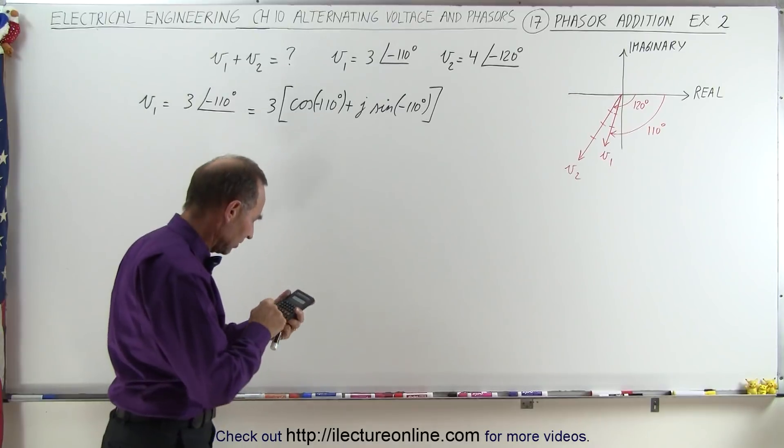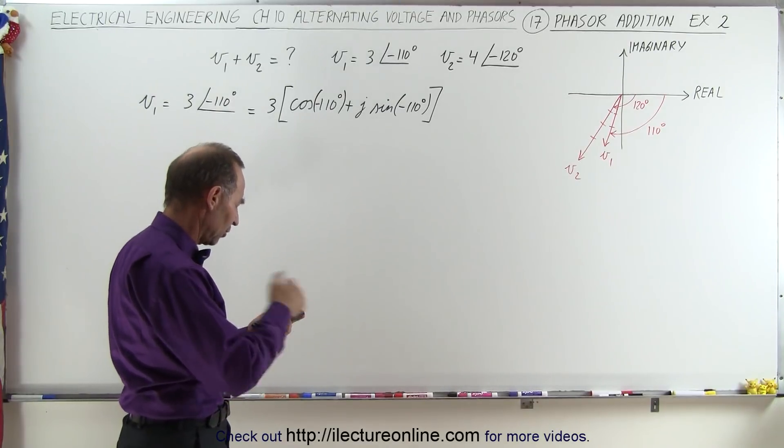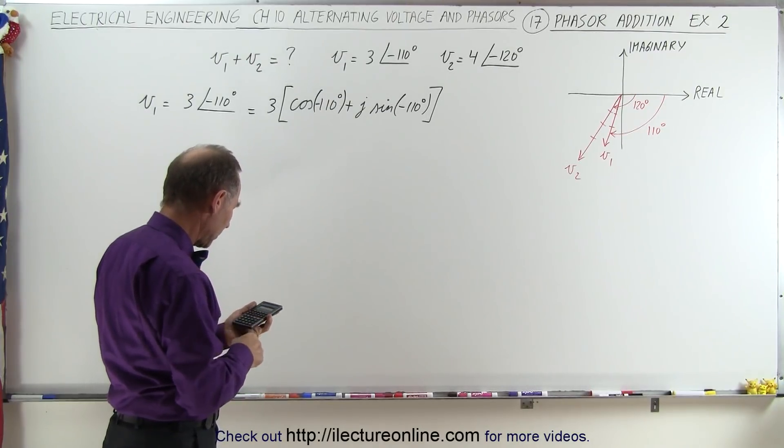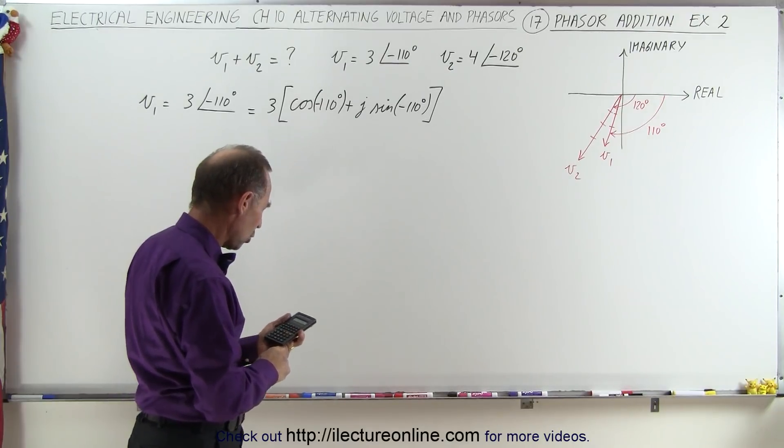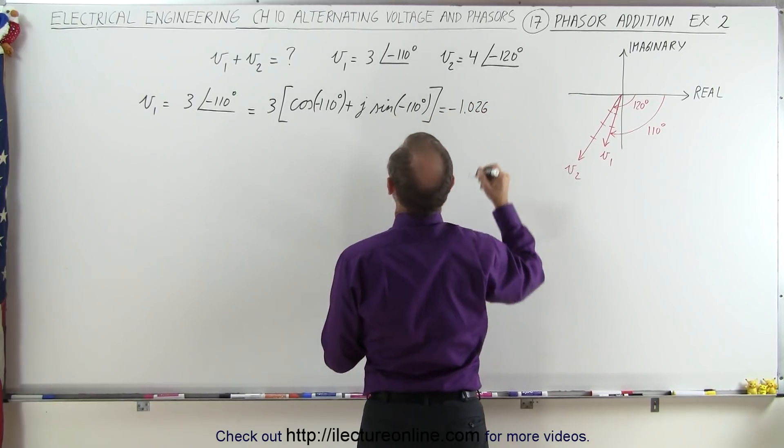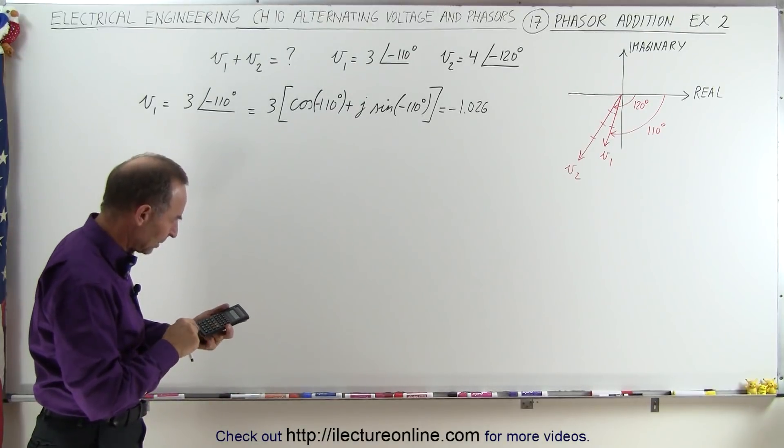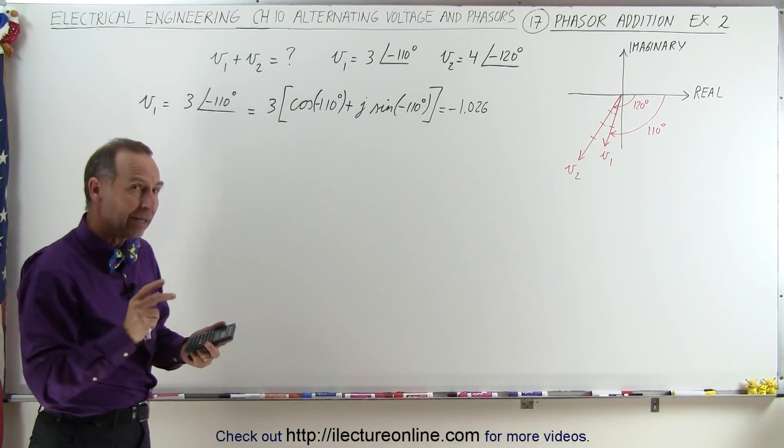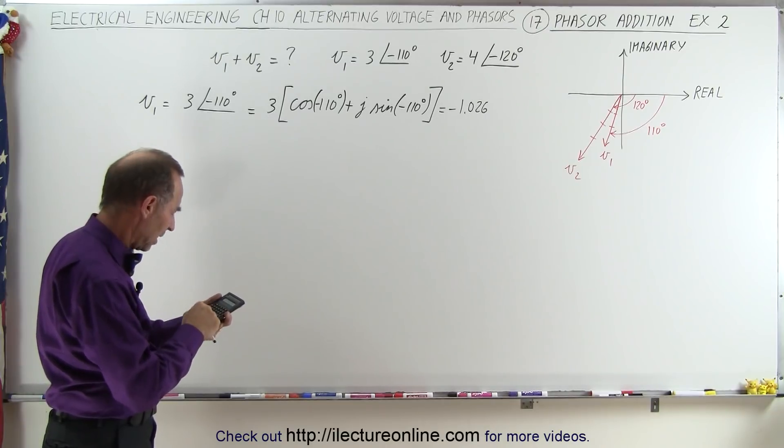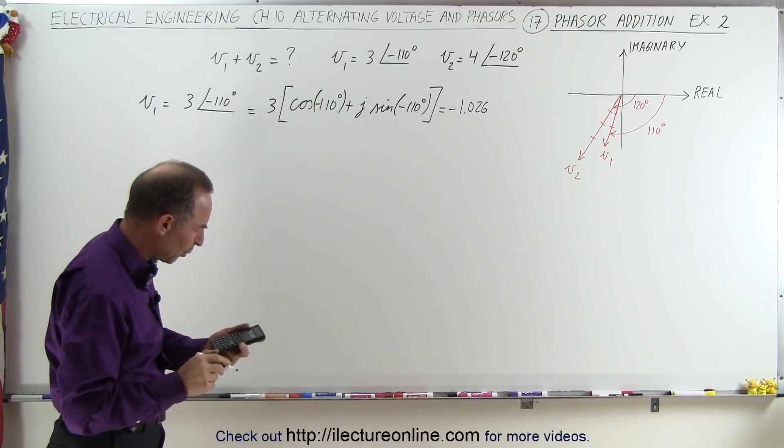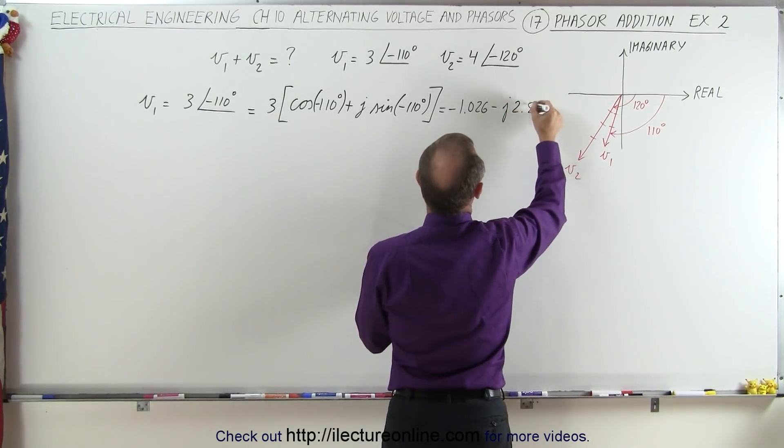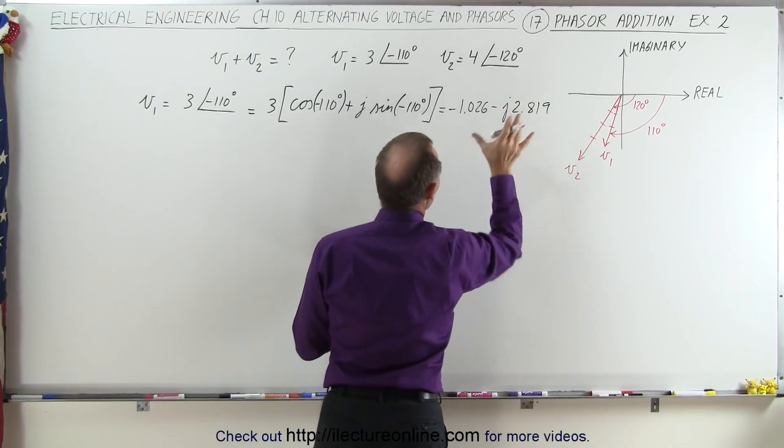That's the same as the cosine of the positive 110 degrees, because the cosine of a negative angle is the same as the cosine of a positive angle. So I'm going to take the cosine of that, minus 0.34 times 3, and we get minus 1.026. So this is equal to minus 1.026. And then on the imaginary part, we take the sine of negative 110. That's minus the sine of plus 110. So 110, take the sine of that, then multiply times negative 1 and multiply times 3, and we get minus 2.819 minus j times 2.819. So we've converted from this format into the real and imaginary parts.